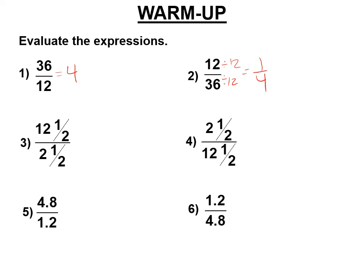Now, 12½ divided by 2½. So 12½ is 25 halves, divided by — 2 times 2 is 4 plus 1 — divided by 5 halves, which is 25 halves times 2 fifths. The 2s cancel, the 5 becomes a 1, the 25 becomes a 5. That's 5 — 5 over 1.